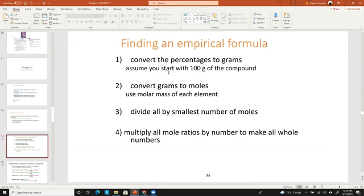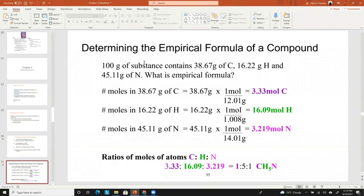You convert the percentages to grams and assume you have a hundred gram sample. You then convert those grams of each element into moles, and then you divide by the number of the smallest moles. Then you multiply the mole ratios by a whole number to make all the mole ratios whole.